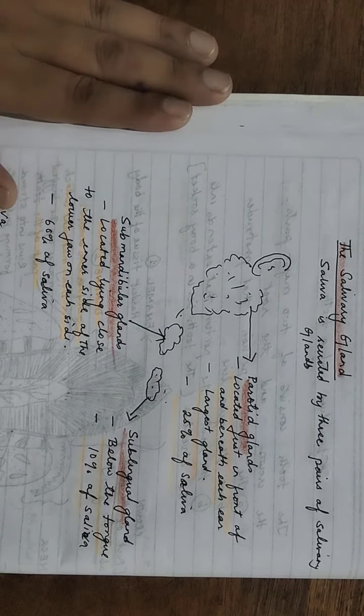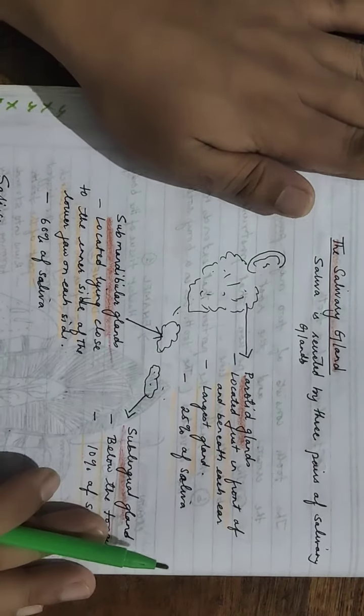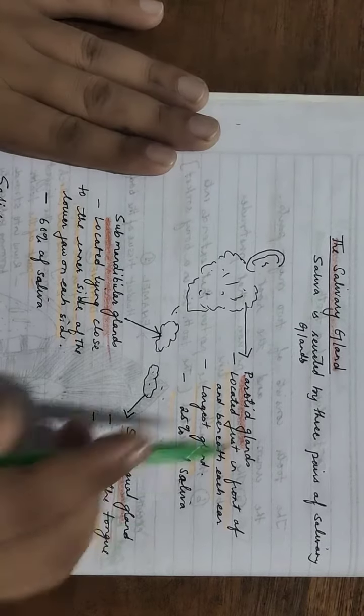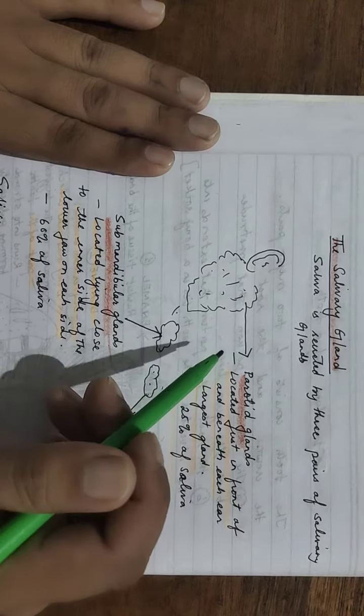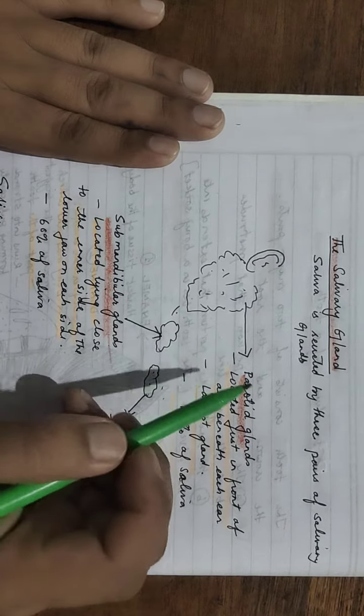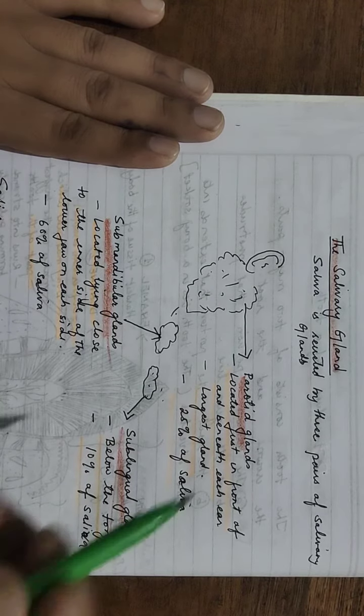After the structure of the tooth, we will be learning about the salivary gland. Saliva is secreted by pairs of salivary glands. Whenever you eat food, the food mixes with the saliva and changes to something else.